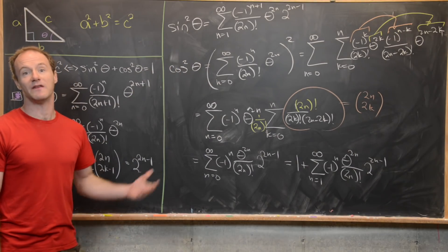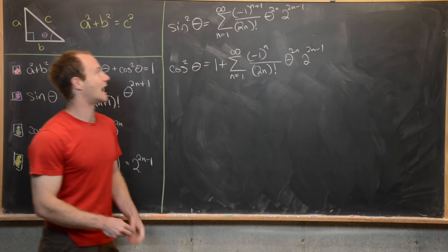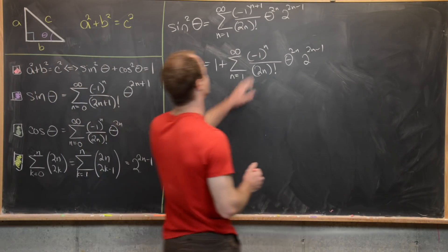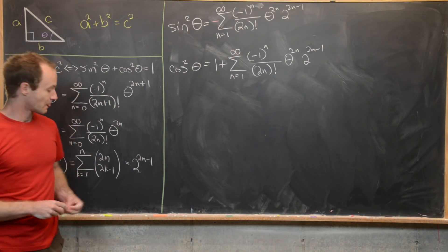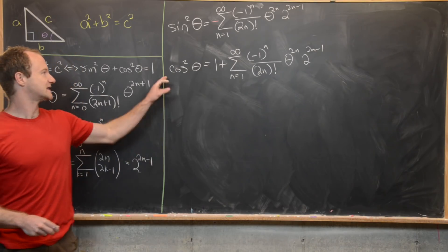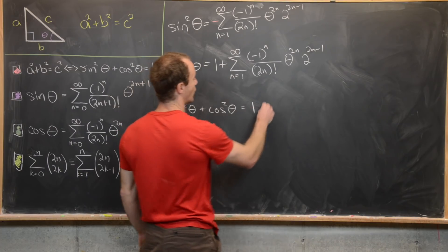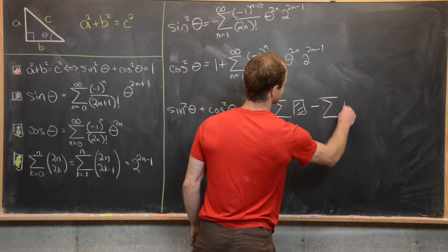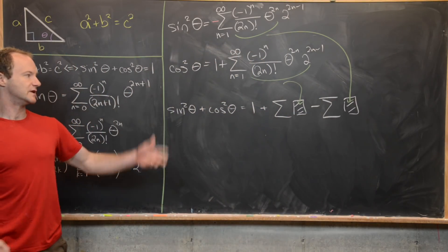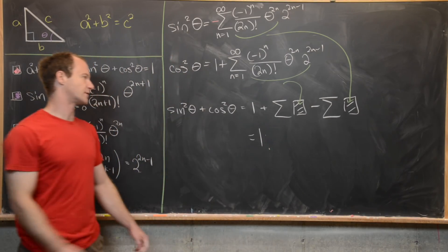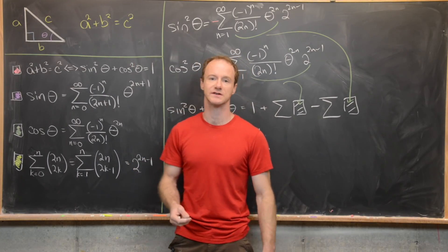Now we have series expansions for both sine squared and cosine squared. In the sine squared series, factor a minus one out of minus one to the n plus one, replacing it with minus one to the n and a minus sign. The two infinite sums are now identical in form — one with a plus sign and one with a minus sign. Adding sine squared and cosine squared gives one plus the sum minus the same sum, which equals zero. Therefore sine squared theta plus cosine squared theta equals one, establishing the Pythagorean theorem via power series.